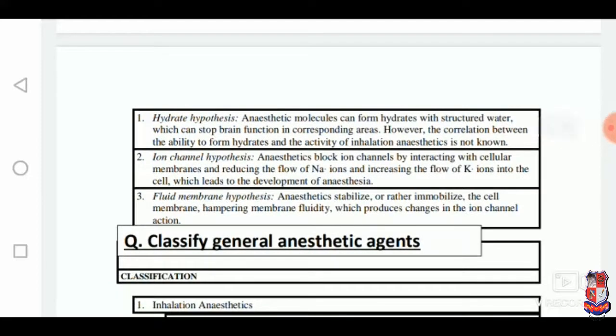Second one is the ion channel or membrane hypothesis. According to this hypothesis, anaesthetics block ion channels by interacting with cellular membranes and reduce the flow of sodium ions and increase the flow of potassium ions into the cell, which leads to the development of anaesthesia.